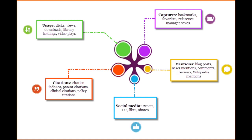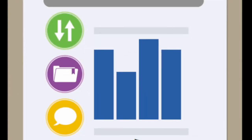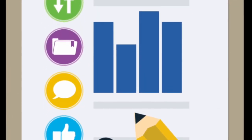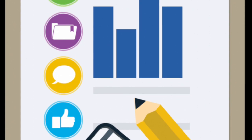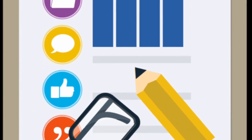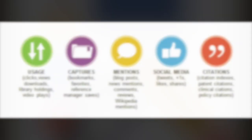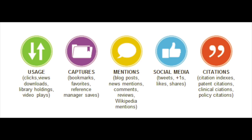The bigger the PlumPrint, the more information in that particular category. Usage is the number one statistic researchers want to know after citations. Examples of these are clicks, downloads, views, library holdings and video plays.